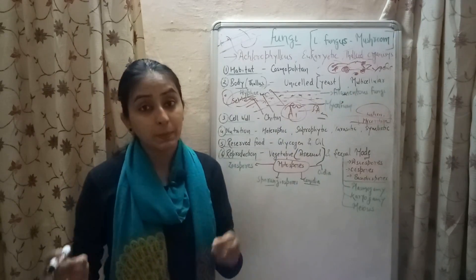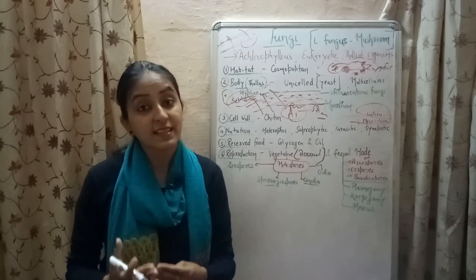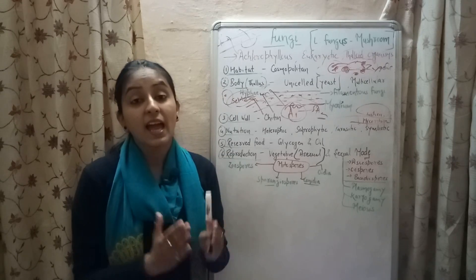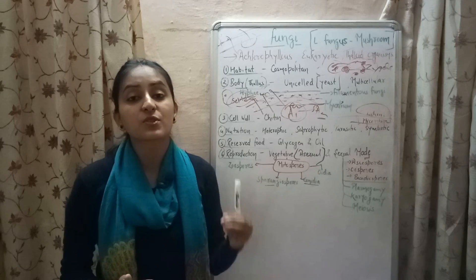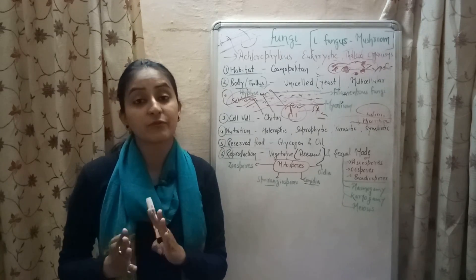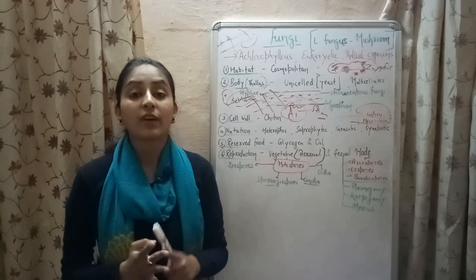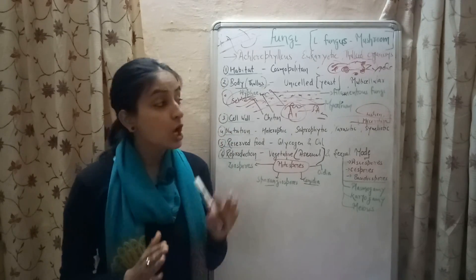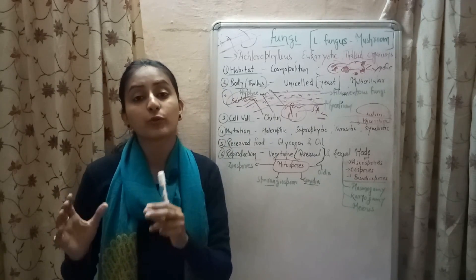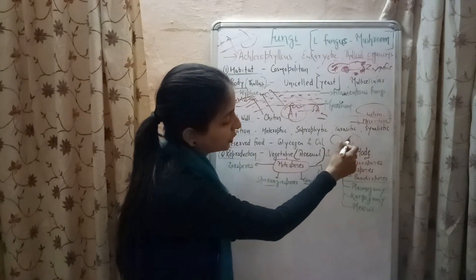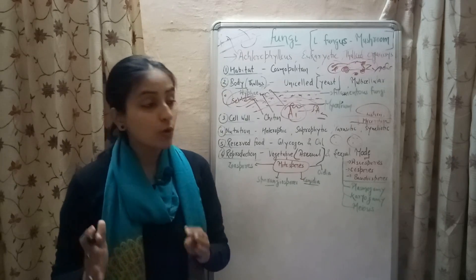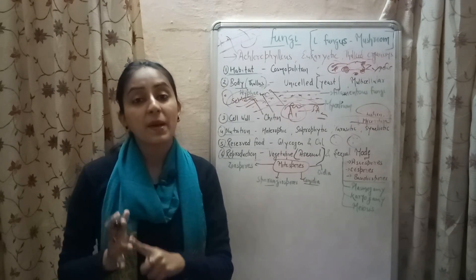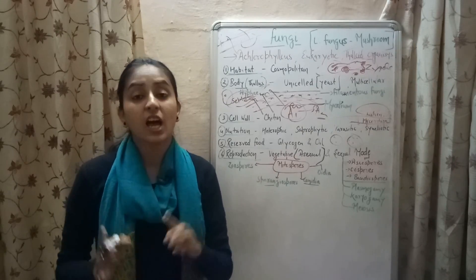On the basis of the morphology of fungi, the mode of formation of spores, and the presence or absence of fruiting bodies, fungi are divided into four classes: Phycomycetes, Ascomycetes, Basidiomycetes, and Deuteromycetes. Fruiting bodies क्या होती हैं? वो structures जिनके अंदर spores present होते हैं. So, on the basis of morphology, mode of formation of spores, and presence or absence of fruiting bodies, Kingdom Fungi is divided into these four classes.